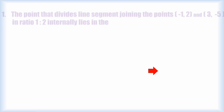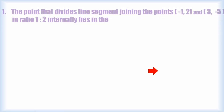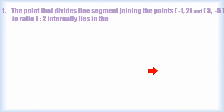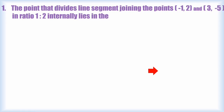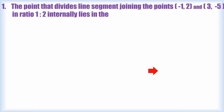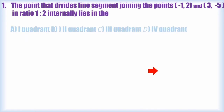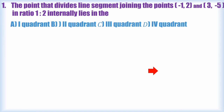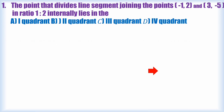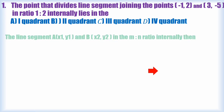The point that divides the line segment joining the points (-1, 2) and (3, -5) in the ratio 1:2 internally — in which quadrant does it lie? Four options are given.